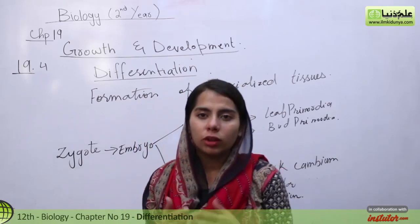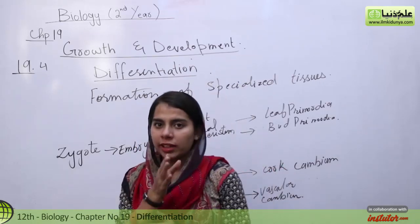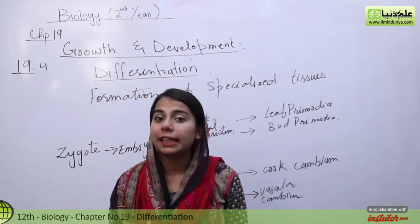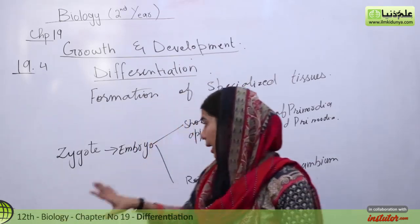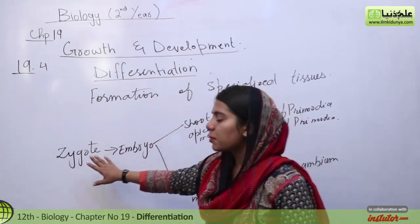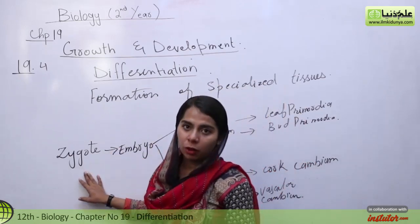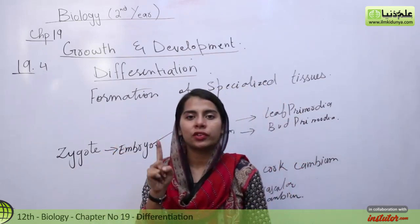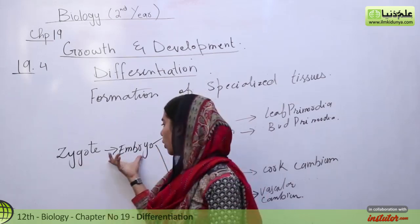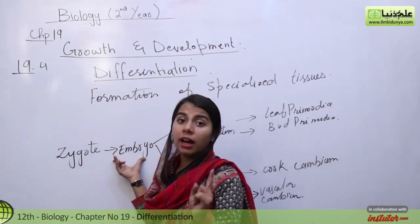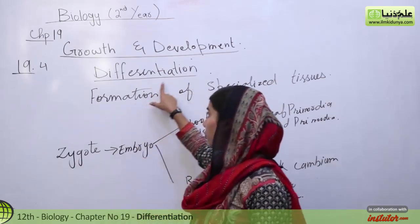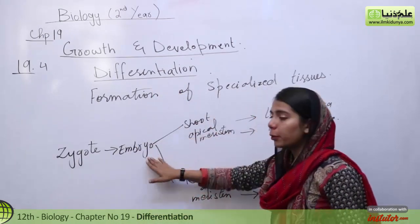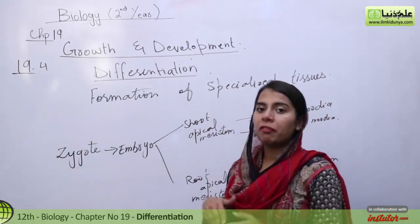Differentiation is not a continuous process — it takes time. First you have a zygote, then zygote becomes an embryo. So formation of embryo is the first stage of differentiation. When the embryo is formed, further development takes place.